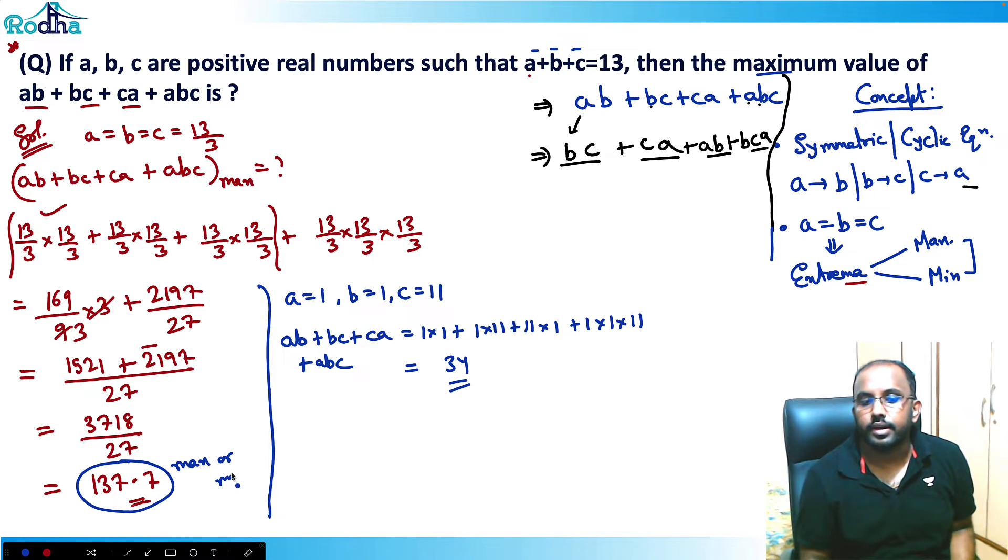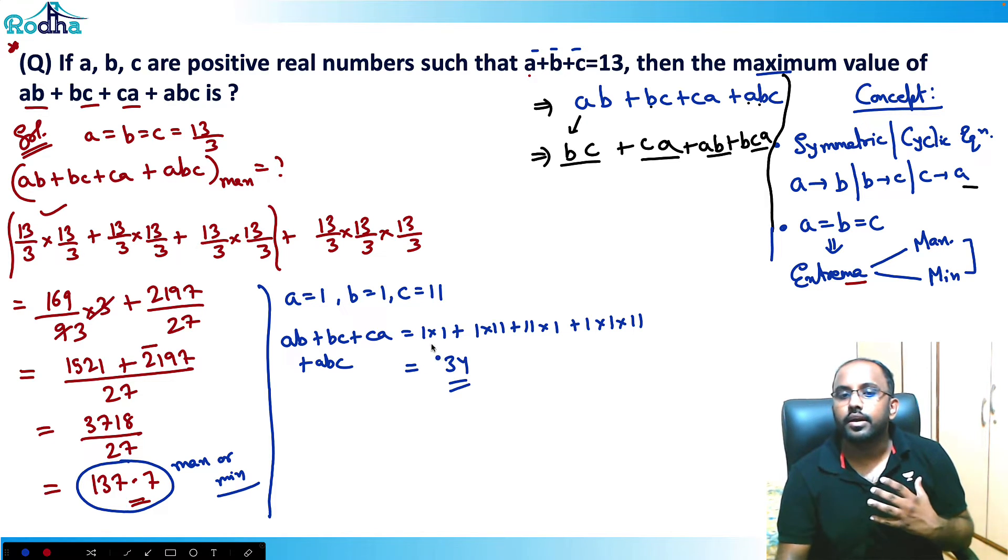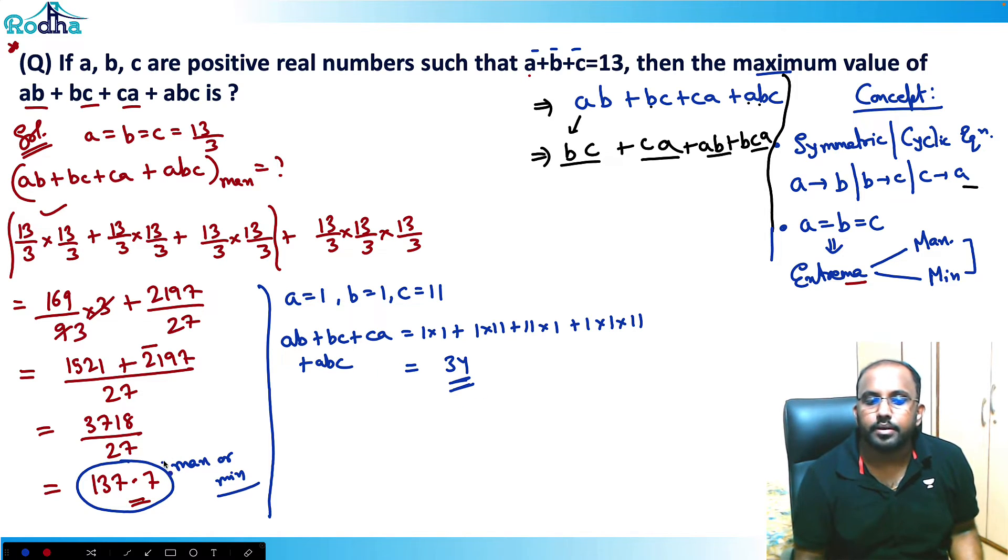If I solve it, I'll be getting here 22 plus 1, 23 plus 11, 34. So I'm getting 34 here. That basically means that I was searching whether this 137.7 is maximum or minimum. When I changed the value, I saw that no, there's some still minimum values available - that is 34 is still available. That means this 137.7 is for sure the maximum value.